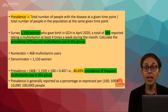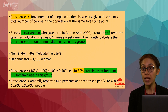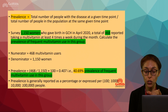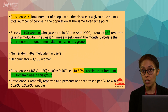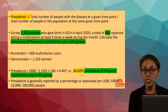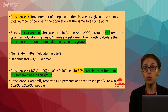From that total, 468 women reported taking multivitamins at least four times a week during that month. To calculate the prevalence of frequent multivitamin use: your numerator is 468 (multivitamin users), your denominator is 1,150 (total women), and you divide 468 by 1,150.